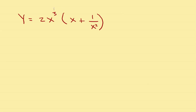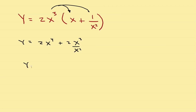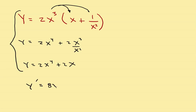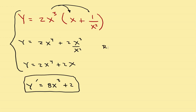Sometimes you have to distribute first. To use the power rule here, multiply this times this, and this times this. Rewrite as y equals 2x to the fourth divided by x squared plus 2x cubed divided by x squared, which simplifies to 2x to the fourth plus 2x — the x terms cancel out. Now take the derivative: y prime equals 8x cubed plus 2, and you are done. This initial step is called the rewrite phase.